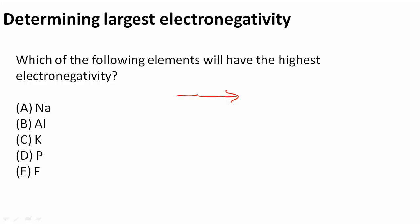We know that when we go from left to right across the periodic table, electronegativity increases. And as we go down the periodic table, from top to bottom, it decreases.